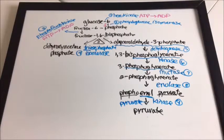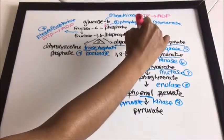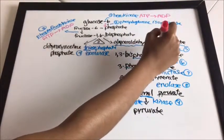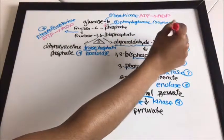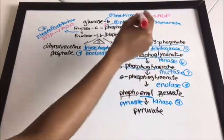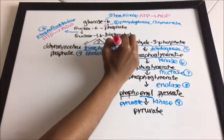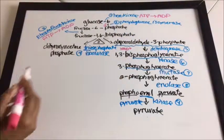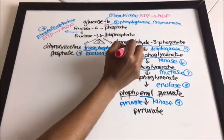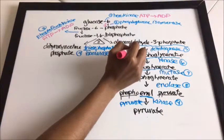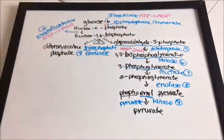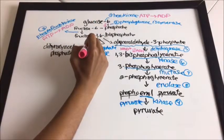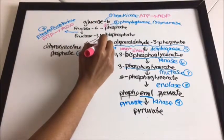Between glyceraldehyde-3-phosphate and 1,3-bisphosphoglycerate, with the enzyme glyceraldehyde-3-phosphate dehydrogenase, there is a reaction: NAD+ is converted to NADH. This reaction is also reversible.